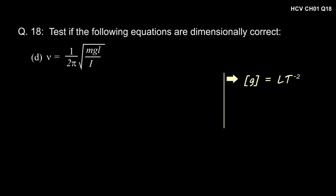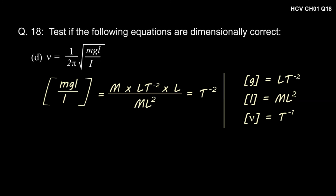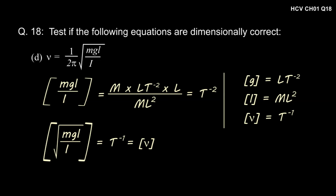In the last part, we have to check if frequency is equal to 1 by 2 pi root under MgL divided by I is dimensionally correct. The dimension of g is Lt to the power minus 2, the dimension of moment of inertia I is ML squared, and the dimension of frequency is t to the power minus 1. The dimension of MgL divided by I is mLt to the power minus 2 into L divided by ML squared, which on simplification gives t to the power minus 2. Therefore, the dimension of root under MgL by I is t to the power minus 1, which is the dimension of frequency. Therefore, the expression is dimensionally correct.